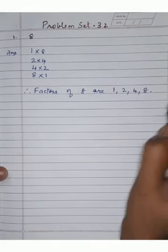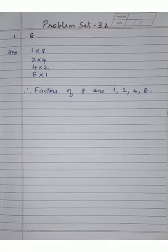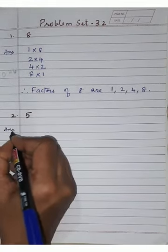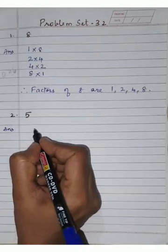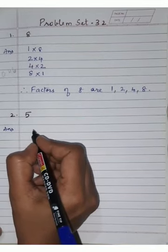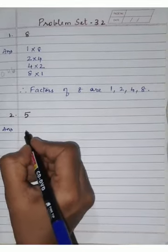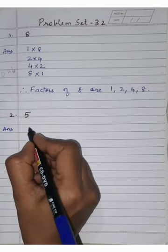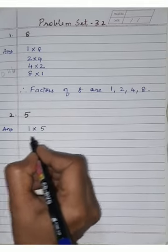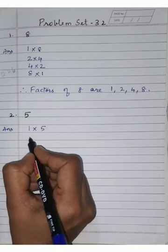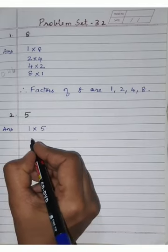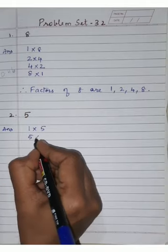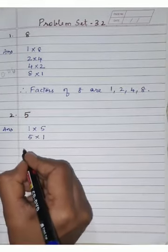Our second question is 5. We have to find the factors of 5. 1 × 5 = 5. Two, three, and four tables are not coming. Then directly in the 5 times table: 5 × 1 = 5. Therefore, factors of 5 are 1, 5.